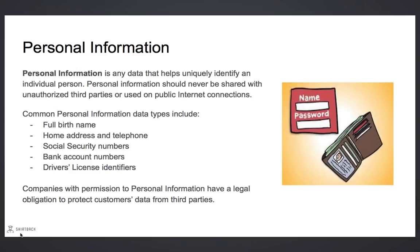Additional personal information types include home address and telephone, social security number, bank account information, and driver's license. Companies with permission to your personal information have a legal obligation to protect your data from third parties.